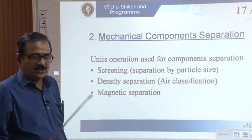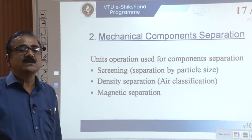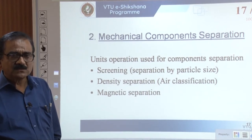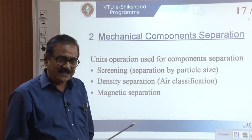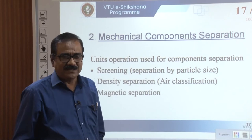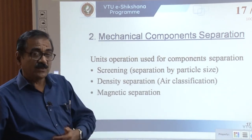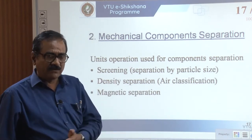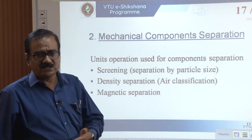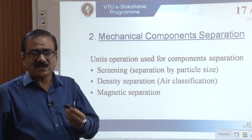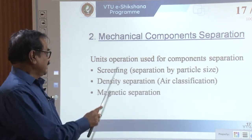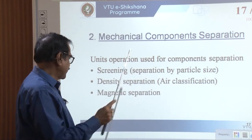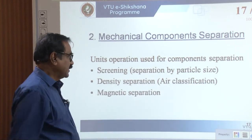As an environmental engineer, you should never forget the difference between unit operation and unit process. Unit operations are those engineering techniques where we never change the material properties — we change only physical properties like size, shape, or maybe density. On the contrary, unit processes may be chemical or biological, where one material is totally converted into another — solid getting converted into liquid, liquid getting converted into gas or ash. The three types of mechanical separation are: screening, density separation, and magnetic separation.